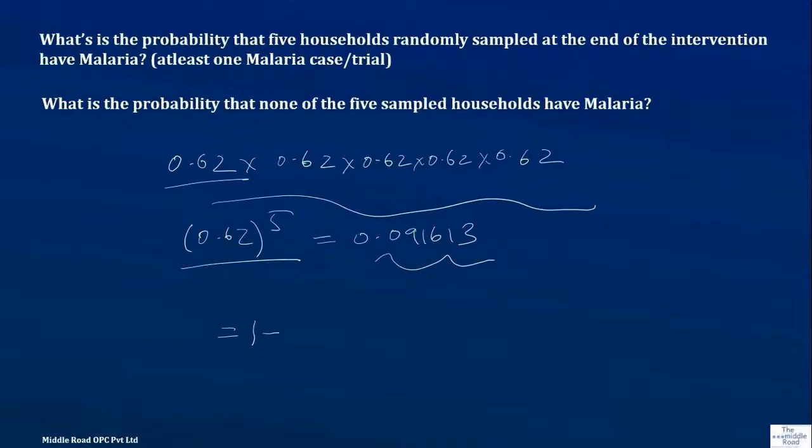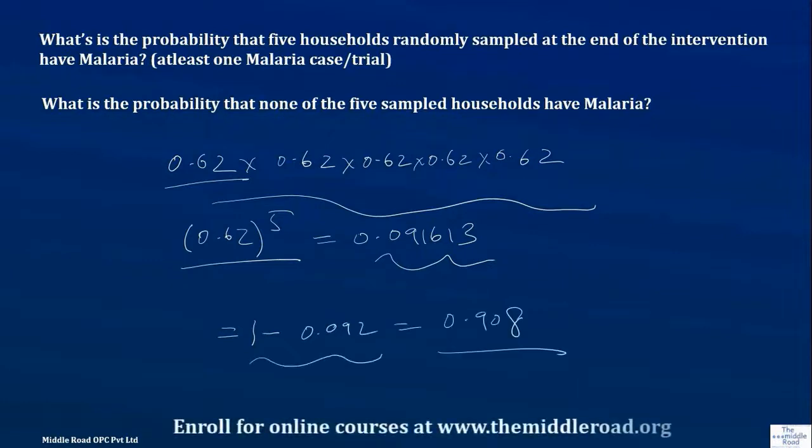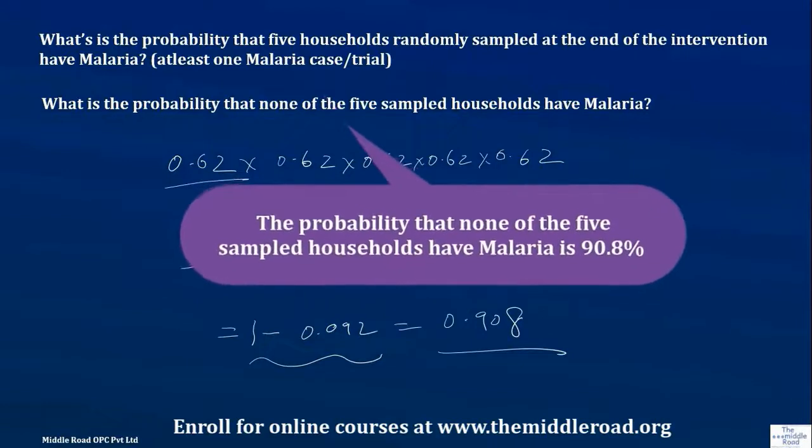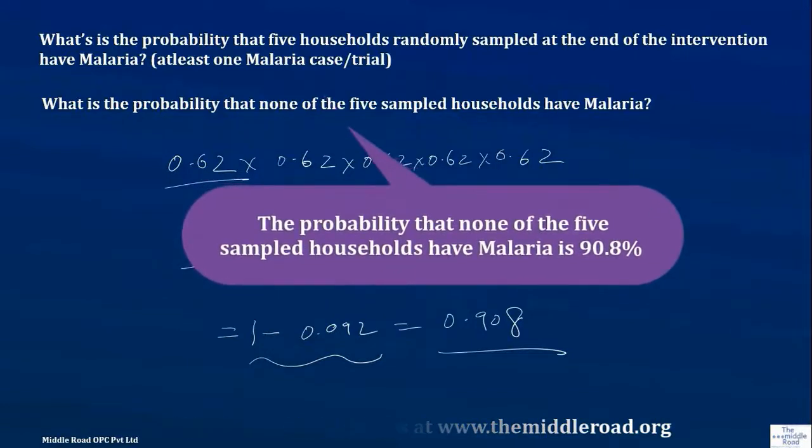The probability that at least one will have malaria: 1 minus 0.092 comes to 0.908. What is the probability that in five randomly sampled households at least one has malaria? It is 0.908.